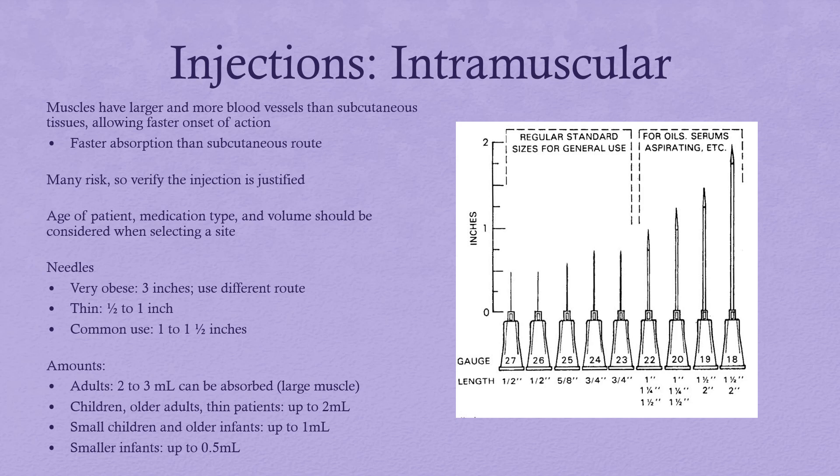Intramuscular injections deliver medication through the skin and subcutaneous tissues into the muscle. This has a faster absorption rate than subcutaneous but comes with more risks. Stop and think: does this patient really need this medication in the muscle, or is there a different route that would work better? Vaccines are about the only thing commonly given in the muscle anymore; there are still some antibiotics, but we really try to avoid this method because it is so painful for the patient.